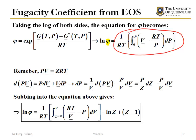To use this equation, because I've got V here, that means I need an equation of state that's in the form V equals some function of temperature and pressure. As we know, not many equations of state are in that form.